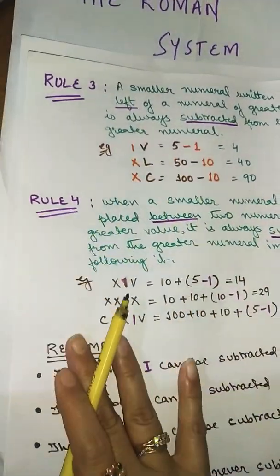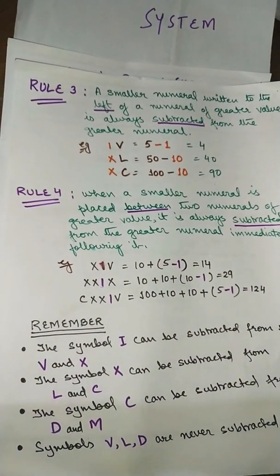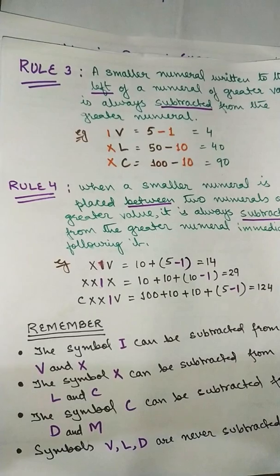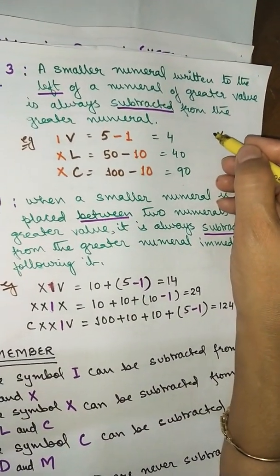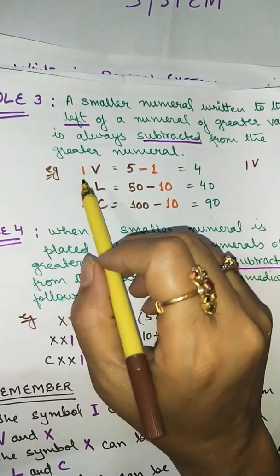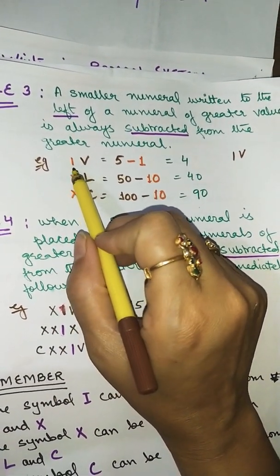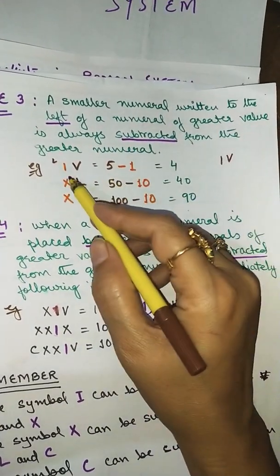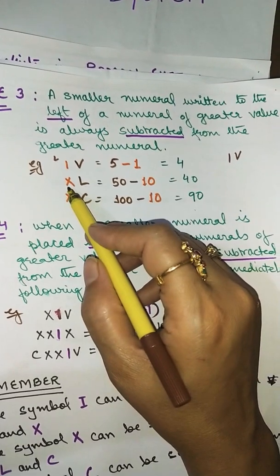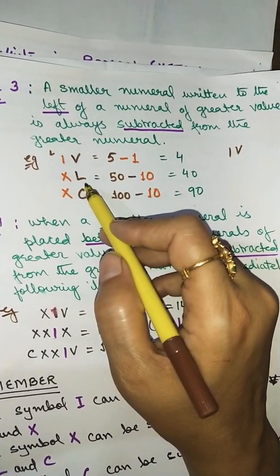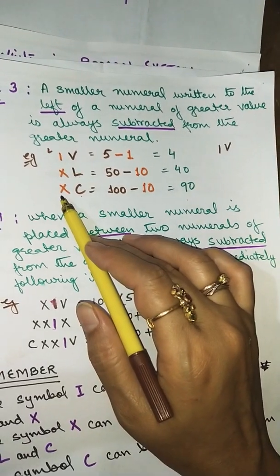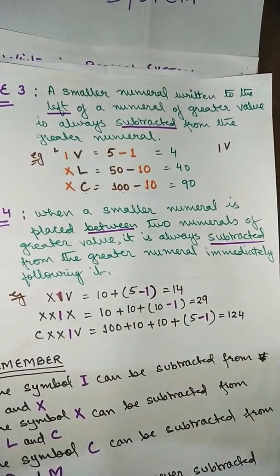Rule three: a smaller numeral written to the left of a numeral of greater value is always subtracted from the greater numeral. For example, IV: V stands for 5 and I is on the left side, so 5 minus 1 = 4. XL means L is bigger, so 50 minus 10 = 40. XC means C is bigger, so 100 minus 10 = 90.